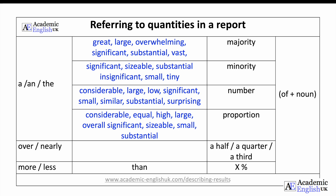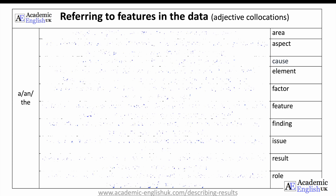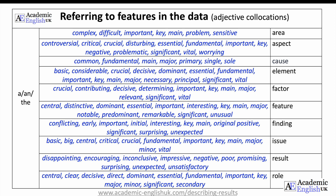Now I'll discuss features using adjective collocations. This is quite similar to quantity in structure, but you are referring to the discrete items of the research rather than the students themselves. There are 10 key features I think are important: area, aspect, cause, element, factor, feature, finding, issue, result, and role — all of which have associated adjective collocations. You may want to pause the slide and read through this in more detail.